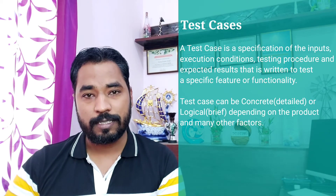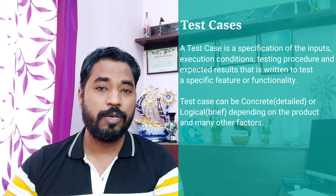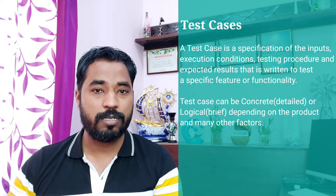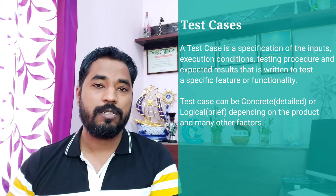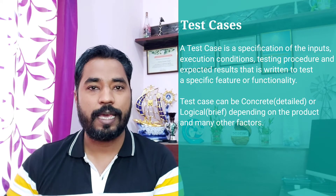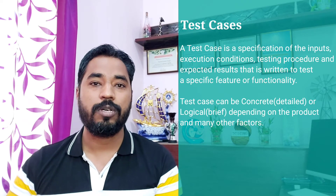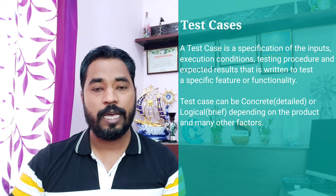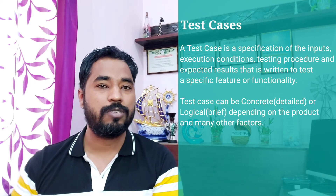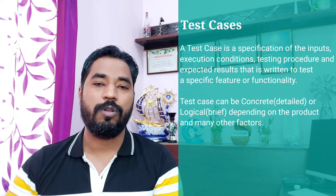When you are writing test cases, you have only those columns. When you start executing the test cases, you add two more columns: actual result and the status of the test. The actual result is what exactly happened on screen in real time, and you compare that with the expected. If expected equals actual result, you mark the status as passed; otherwise, it will be failed.